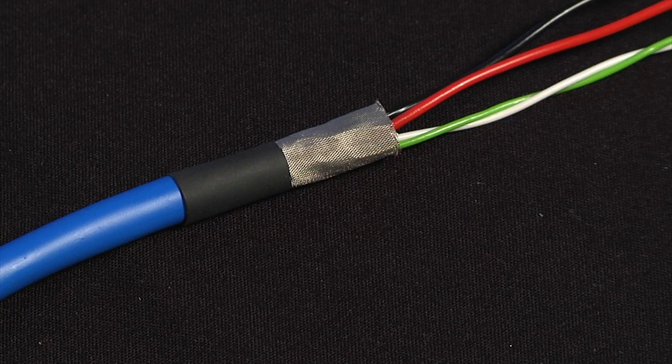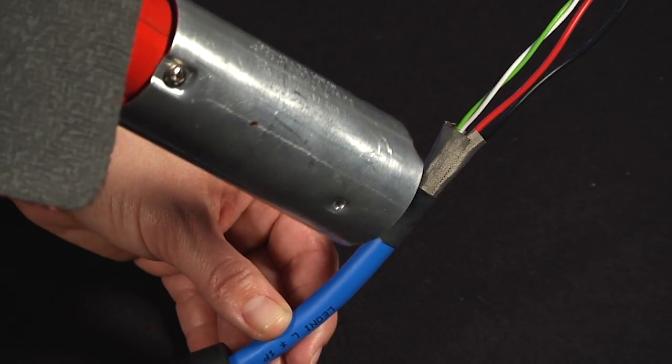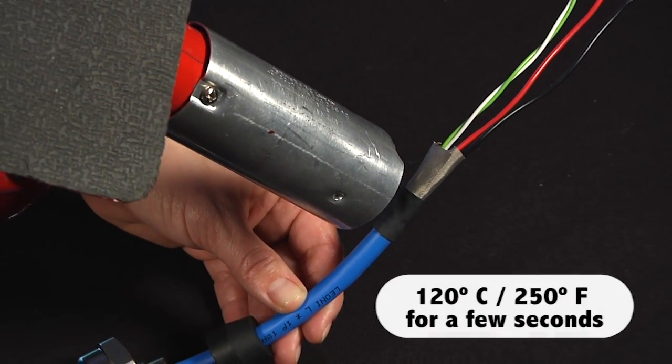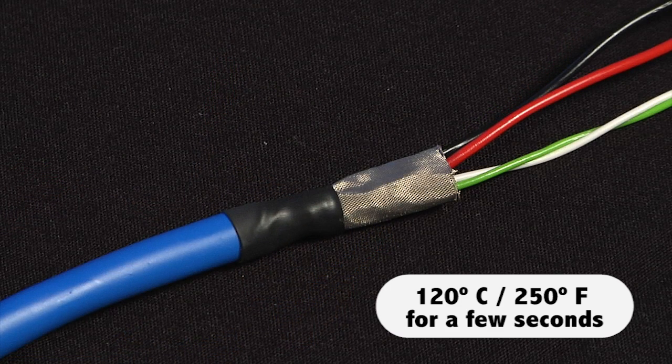To attach the heat shrink to the cable, slide the shielded heat shrink over the cable until the tubing completely covers the foil shield and the drain wires. If it doesn't completely cover the foil and drain wires, trim the foil back until it does. Carefully apply heat to shrink the tubing. 120 degrees Celsius or 250 degrees Fahrenheit for a few seconds should do it.